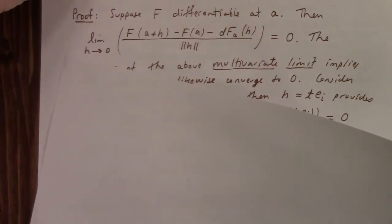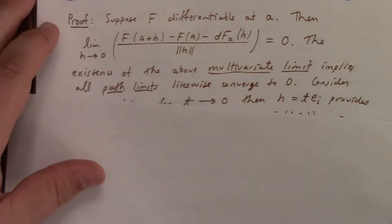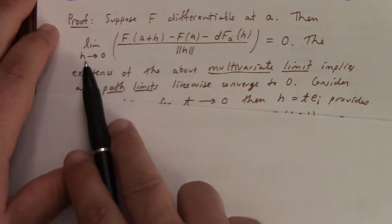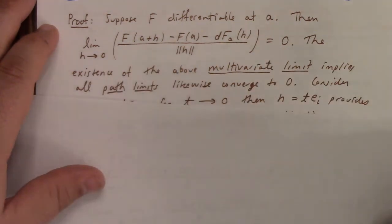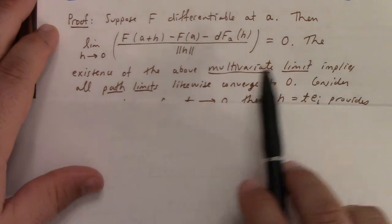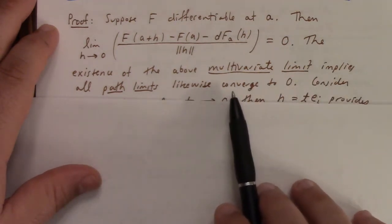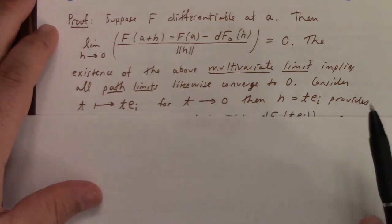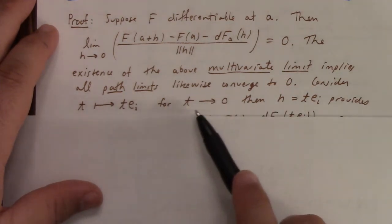So, let me try to elaborate on why that is. So, if it's differentiable, if the function's differentiable at a, then you have this wonderful, complicated, multidimensional Frechet quotient being equal to zero, that limits to zero. And so, if the multivariate limit exists, then it means all path limits likewise converge to zero, right? So, you can consider the path along the i-th coordinate direction approaching the origin.